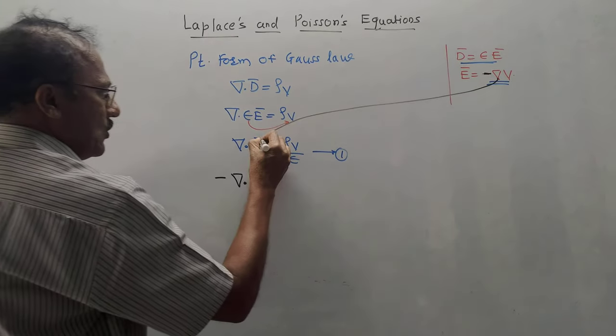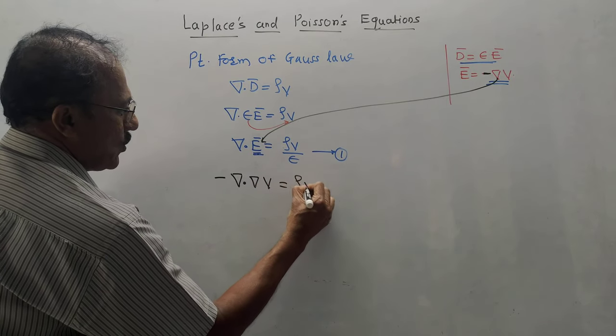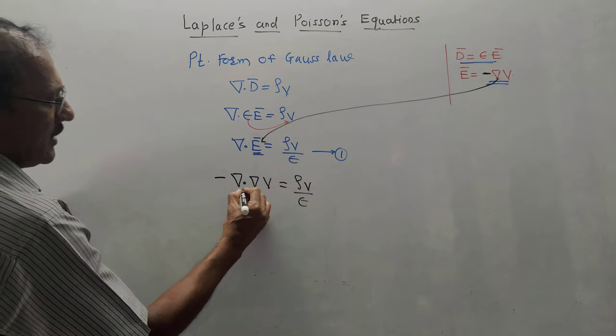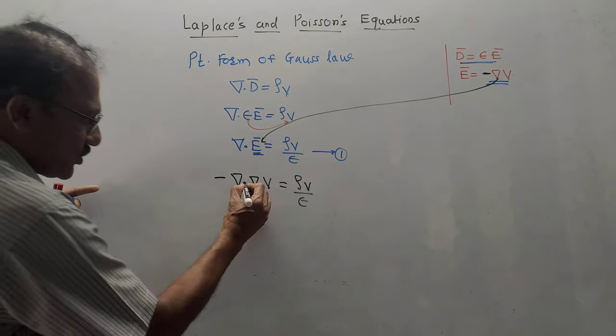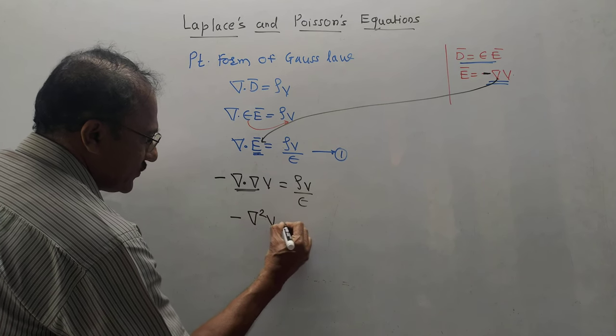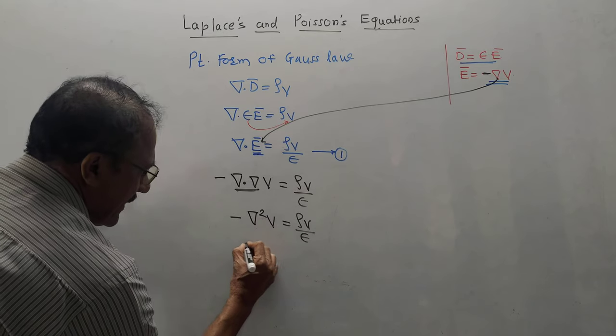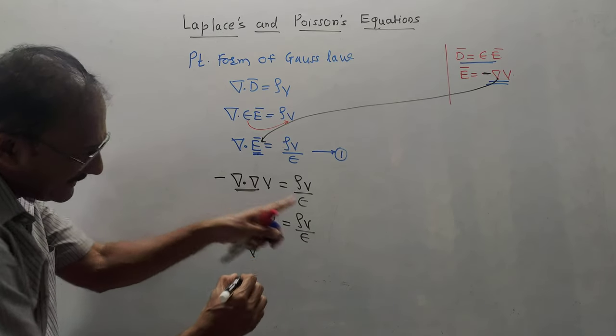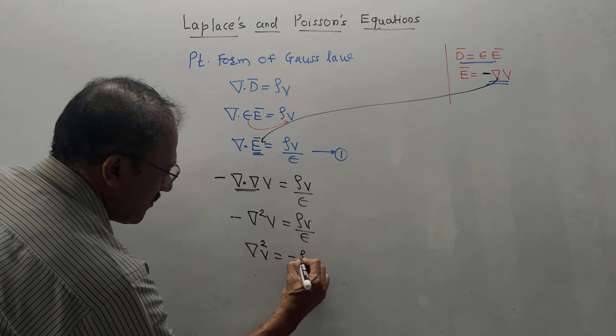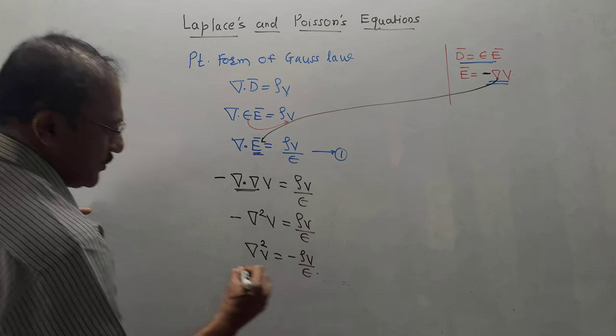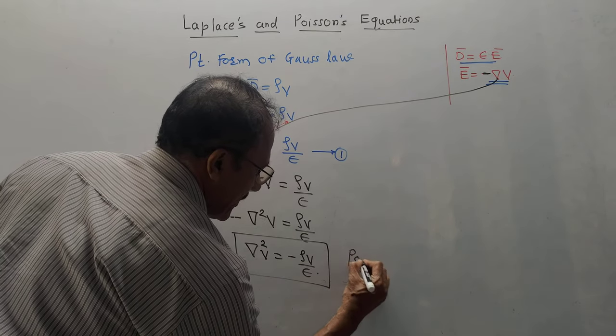The mathematical identity is ∇·∇ = ∇², so it becomes -∇²V = ρV/ε. Transferring the minus sign to the RHS, we get ∇²V = -ρV/ε. This equation is called Poisson's equation.